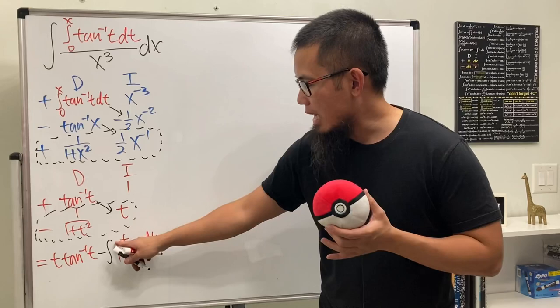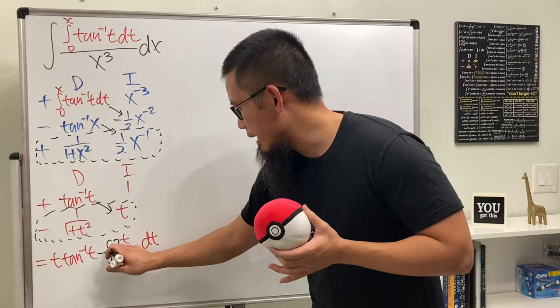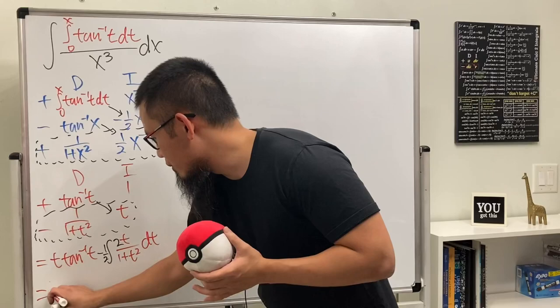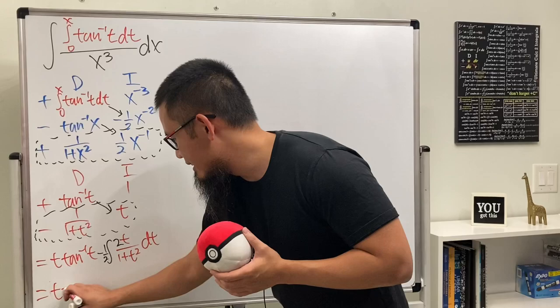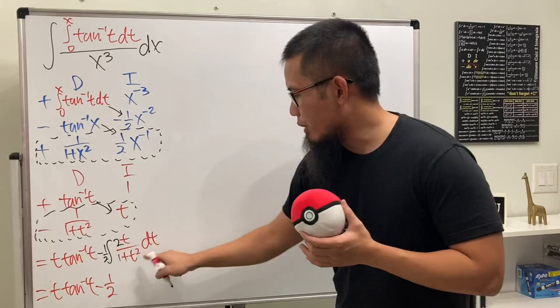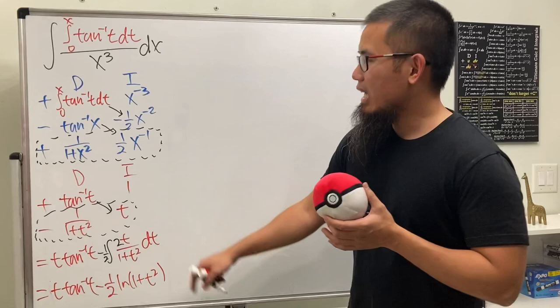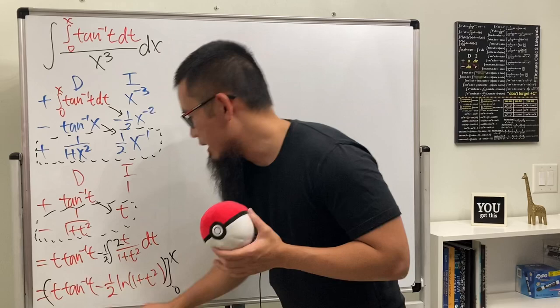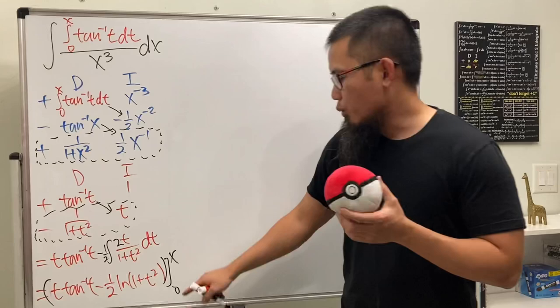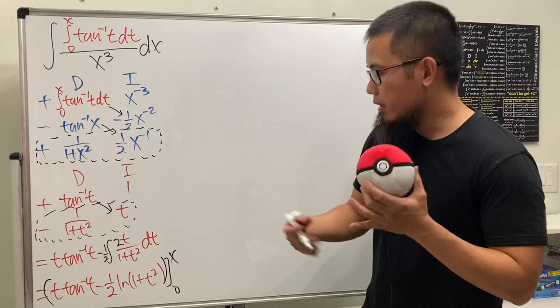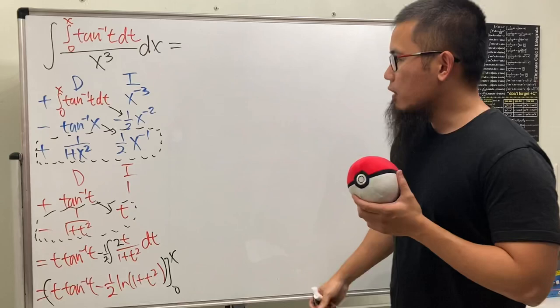We can do a u-substitution: let u equal one plus t squared, so du equals 2t dt. We only have t on top, so we multiply and divide by two to get the full du. This gives us t times inverse tangent of t, minus one half times ln of one plus t squared — and since one plus t squared is always positive, no absolute value is needed. Now we plug in zero and x: when we plug in x, we replace all t's with x's; when we plug in zero, the second part evaluates to zero.